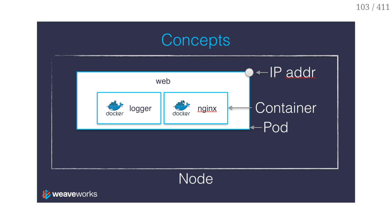So all the containers in a pod will have the same IP address. This is also the reason why pods need to be scheduled as atomic units — because the only way for that to happen is for the network namespace to be shared, and this cannot happen across multiple hosts. All the processes have to be on the same machine.